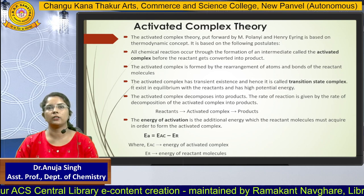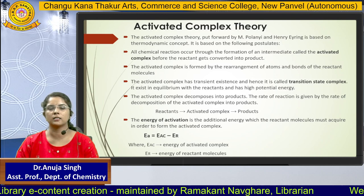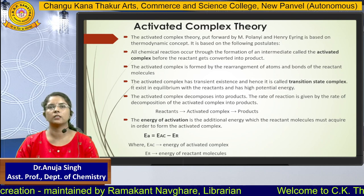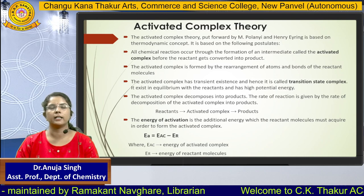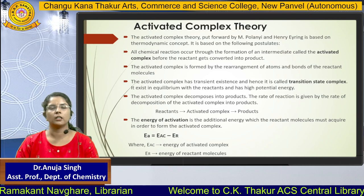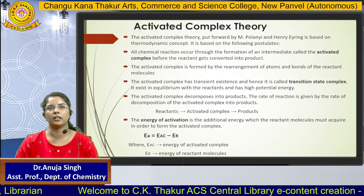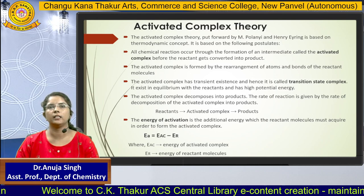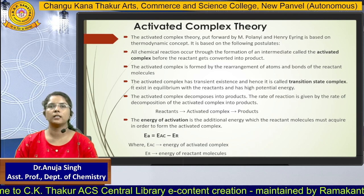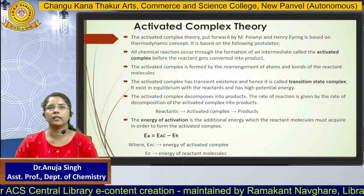Third, the activated complex has a transient existence and hence it is known as the transition state complex. It exists in equilibrium between the reactant and product and has high potential energy. The activated complex then decomposes into product, and the rate of reaction is given by the decomposition of the activated complex into product. The activation energy is the additional energy that a molecule requires to form the activated complex, given by E_A = E_AC − E_R, where E_AC is the energy of the activated complex and E_R is the energy of the reactant molecule.